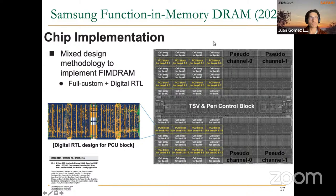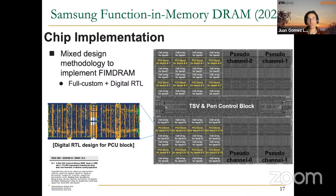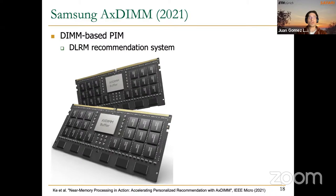A closer view of one HBM2 DRAM layer shows that some DRAM cells in the banks have been replaced by PCU blocks — compute units that can perform multiplication, addition, and other operations for machine learning workloads.